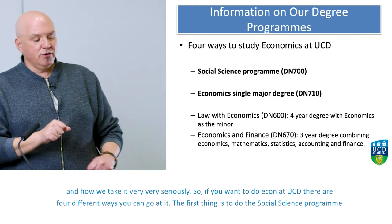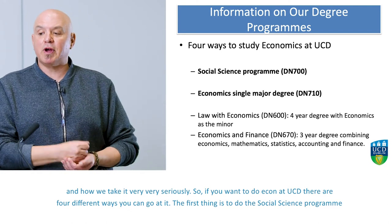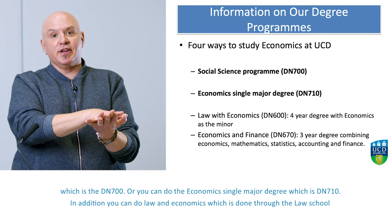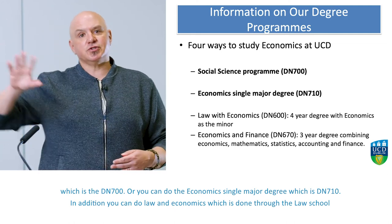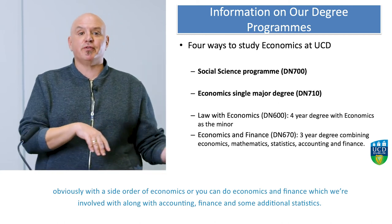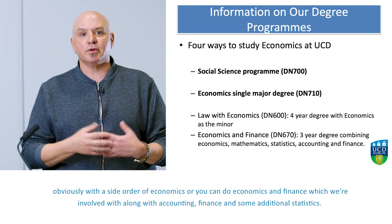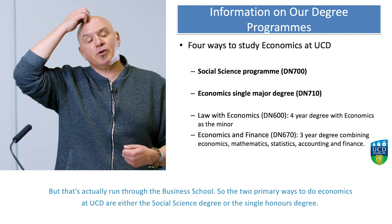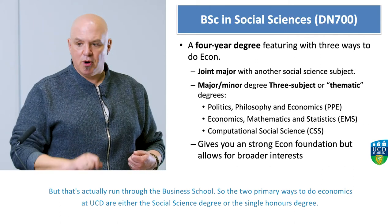If you want to do economics at UCD, there are four different ways. First is the social science program, DN700. Second is the economics single major degree, DN710. Third, you can do law and economics, which is done through the law school. Or you can do economics and finance, which involves accounting, finance, and some additional statistics, though that's run through the business school. The two primary ways are either the social science degree or the single honors degree.